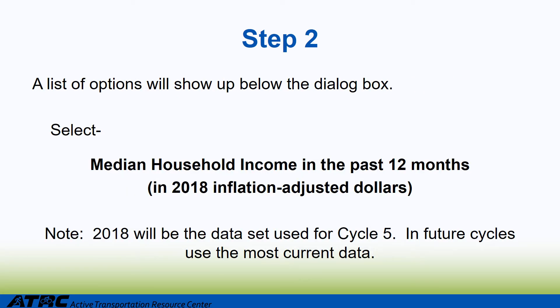Step 2: A list of options will show up below the dialog box. Select 'Median Household Income in the Past 12 Months (in 2018 inflation-adjusted dollars).' Note: 2018 will be the data set used for cycle 5, and future cycles should use the most current data.